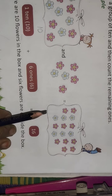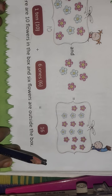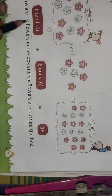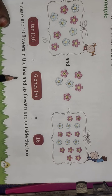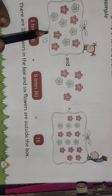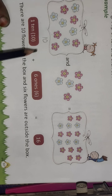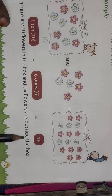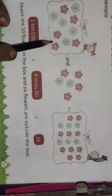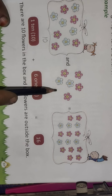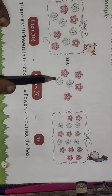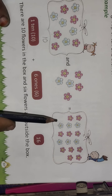There are 10 flowers in the box and 6 flowers outside the box. How many flowers outside the box? Only 6. 10 plus 6 equals 16.